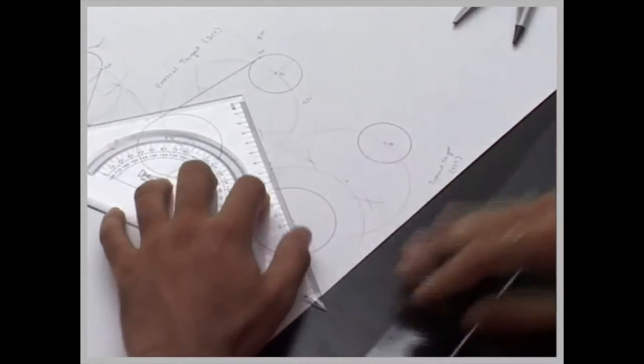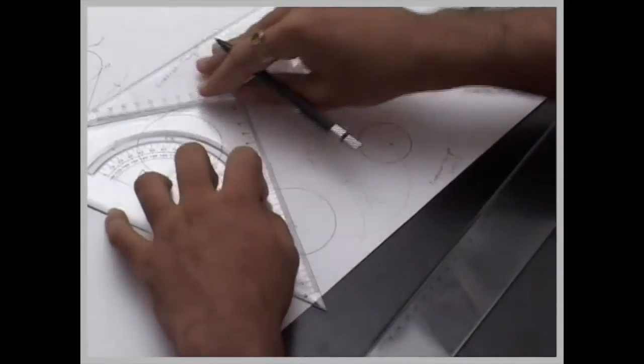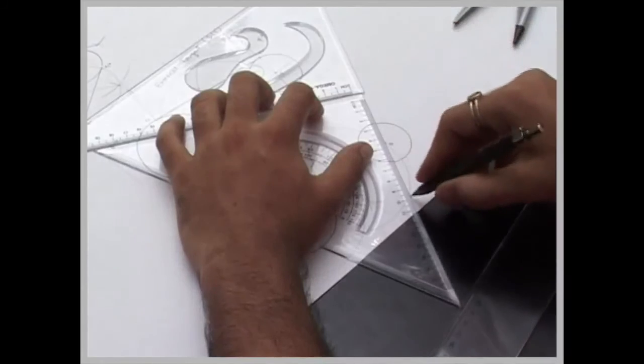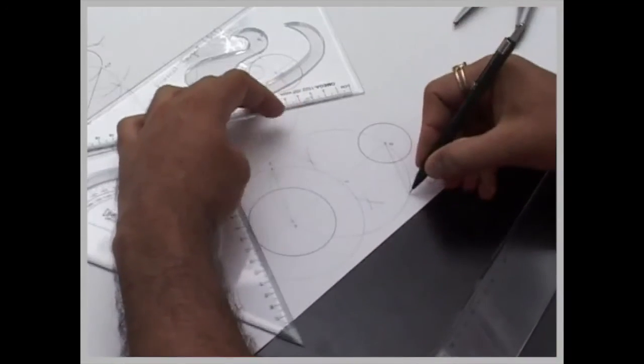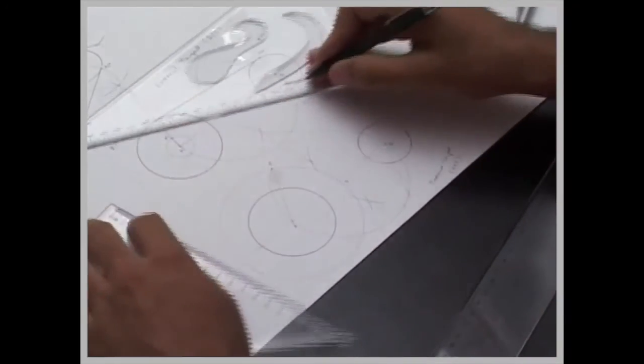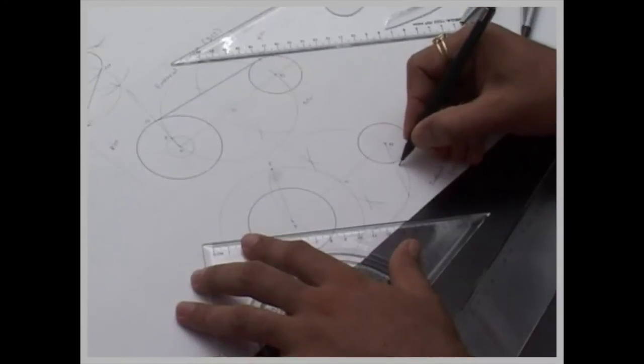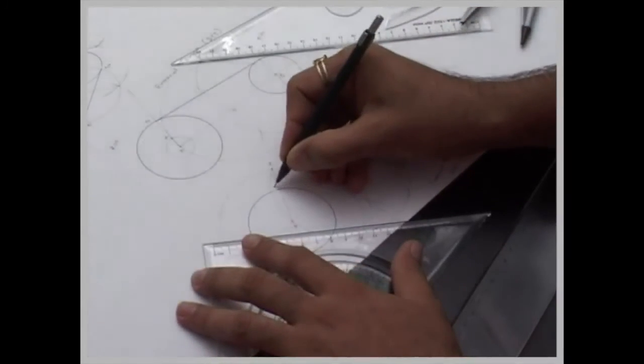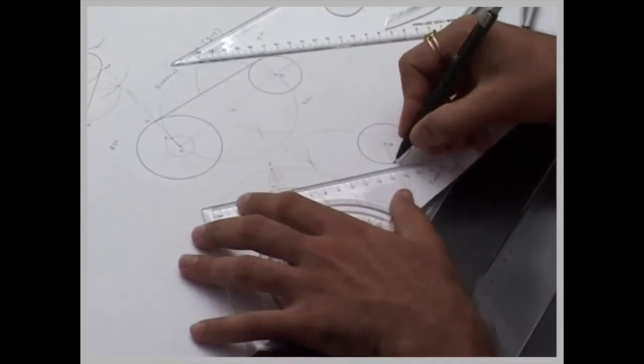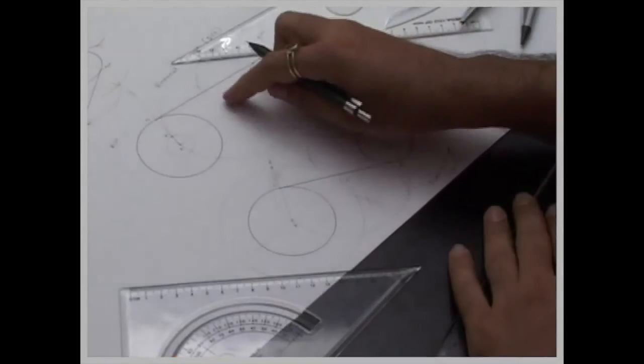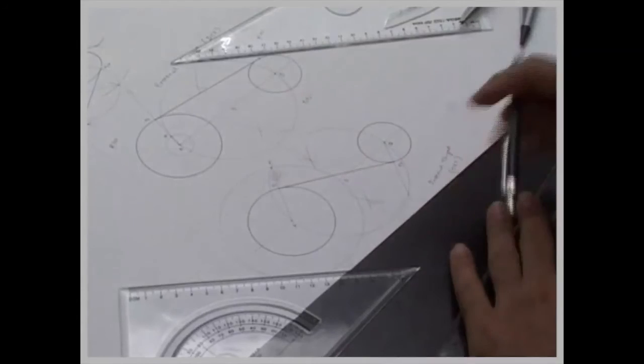Now wherever it intersects, that is point M. Now again we join A to M and we draw parallel and draw line passing through B. Wherever it will come to, this point is D2 and this point is D1. Join D1 to D2. So that is internal tangent. This is external tangent, this is internal tangent.